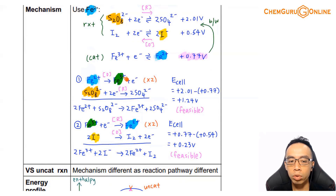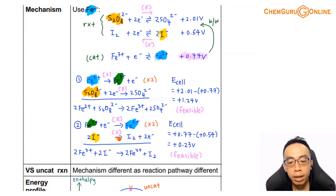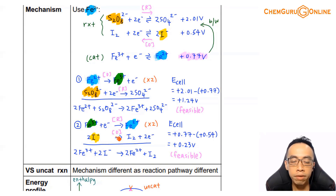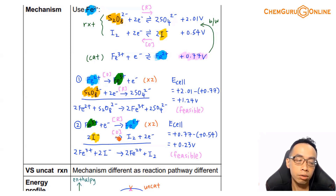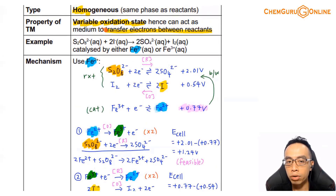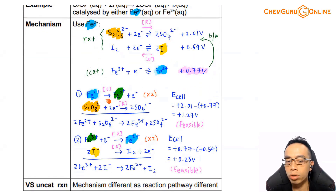So the homogeneous catalyst changes and interferes with the mechanism, but lowers the activation energy. This is why the variable oxidation state of a transition metal is important: Fe²⁺ can oxidize to Fe³⁺ during the mechanism, and Fe³⁺ can reduce back to Fe²⁺. Iron is equally comfortable in the +2 or +3 oxidation state — it doesn't strongly favour one, so it can easily accept and give up electrons, making it an excellent medium for electron transfer.